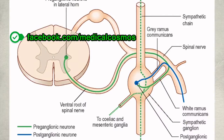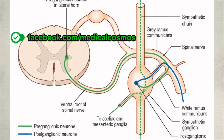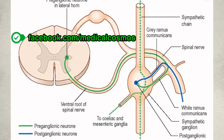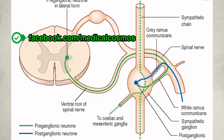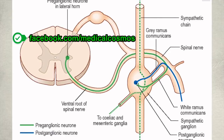Here you may see the cross section of the spinal cord, and you may appreciate the preganglionic neuron in the lateral horn. The lateral horn is only present in the thoracolumbar region, where the sympathetic fibers arise. From the lateral horn, the ventral root of the spinal nerve carries the preganglionic nerve fibers of the sympathetic supply.